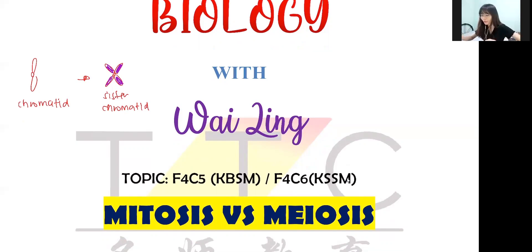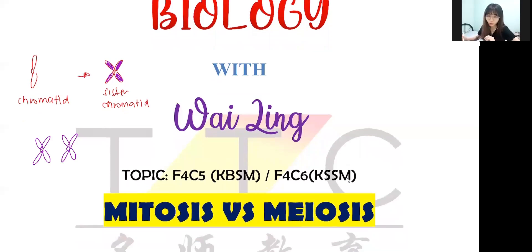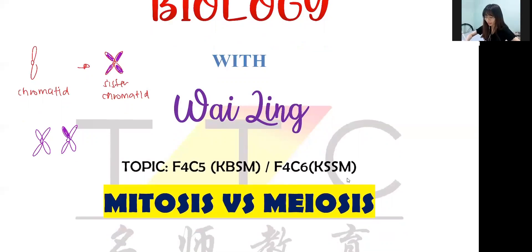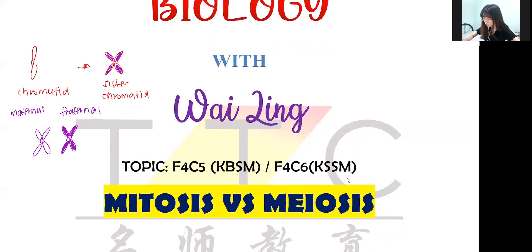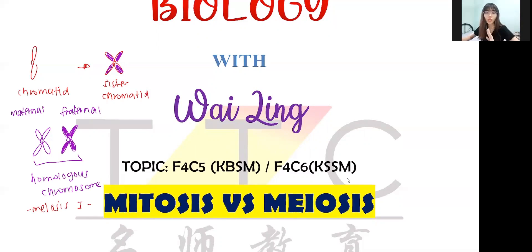A sister chromatid can also be known as a chromosome - the butterfly shape is referred to as a chromosome. And then you can see this thing here as a homologous chromosome. What is a homologous chromosome? It must be two different colors - why? Because one comes from the father and one from the mother, we call them maternal and fraternal chromosomes. We have to remember that homologous chromosomes can only be used in meiosis one - not in meiosis two and not in mitosis.